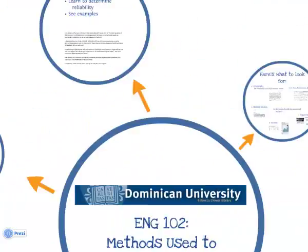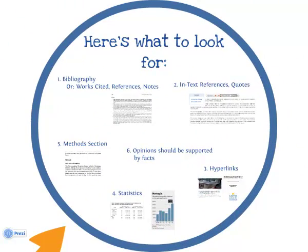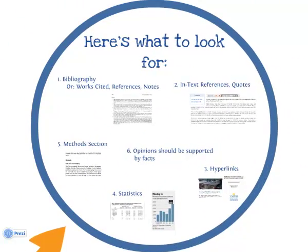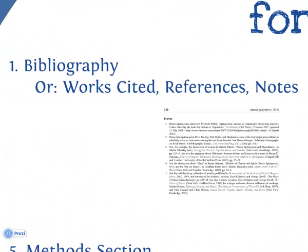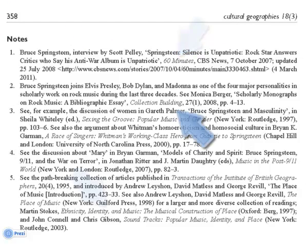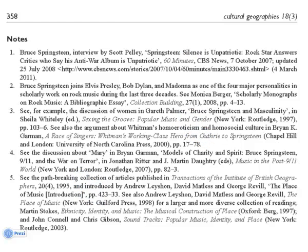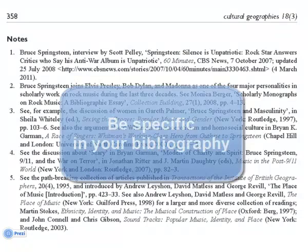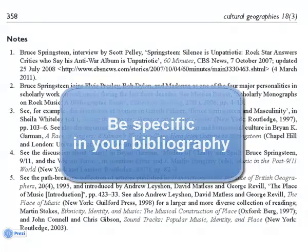Here are things that you can look for to help you understand a source's methods used to collect data. A bibliography, or list of all the sources the author consulted — it may be called works cited, references, or notes. Here, the author consulted, for example, 60 Minutes, a respected news show, and several scholarly articles and books. When writing your annotations, don't just say there is a bibliography, but write about the quality of sources in the bibliography.